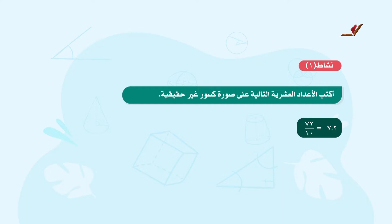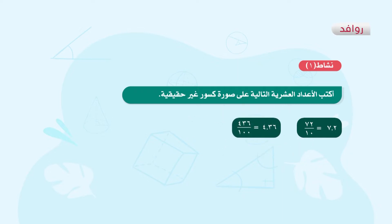ننتقل إلى العدد العشري الثاني: 4 صحيح و36 من 100. نكتبه على صورة كسر غير حقيقي فيكون البسط 436 على 100. نلاحظ أن عدد الأصفار يساوي عدد المنازل العشرية في العدد العشري، والعدد 4 صحيح و36 من 100 فيه منزلتان عشريتان، لذلك يكون المقام يساوي 100.